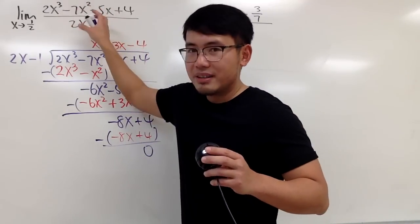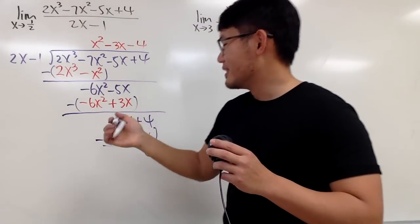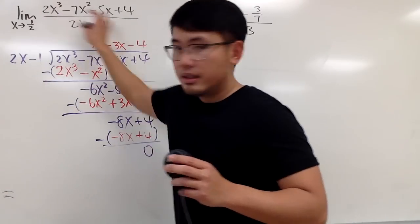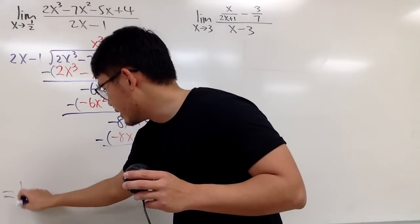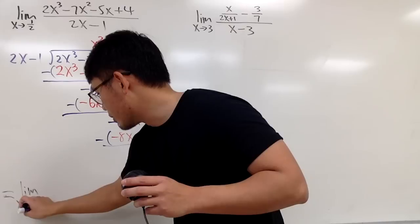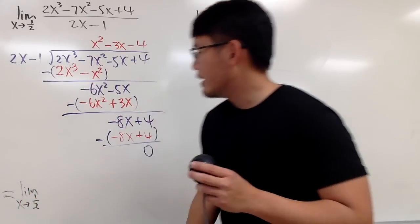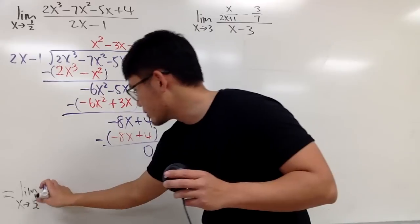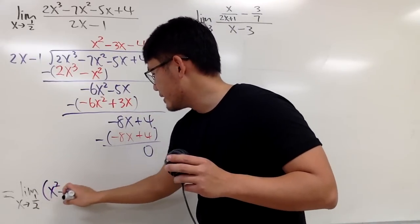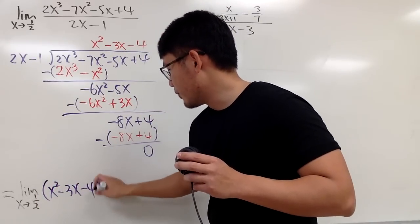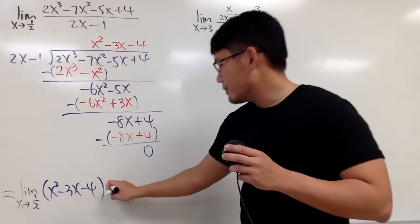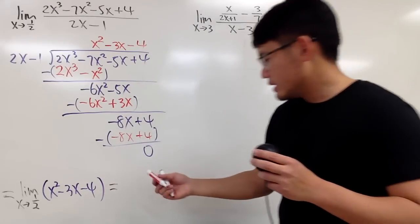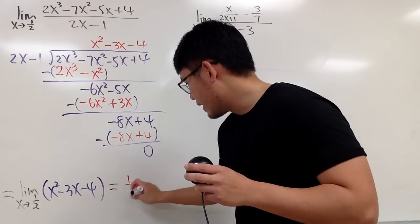So, let me put this down. Now, this original question is equal to the limit as x approaching 1/2 of just this. Namely, I'll just put this down in purple. So, x² minus 3x minus 4, right? Well, now, you are going to put down 1/2 into all the x. So, let's see. We have 1/2.